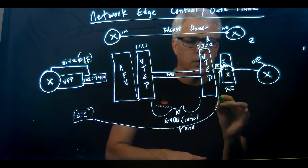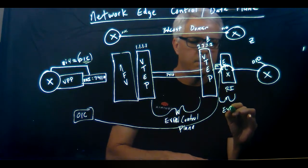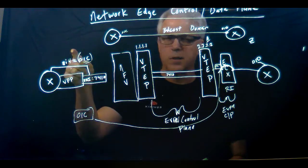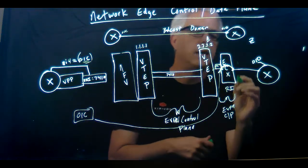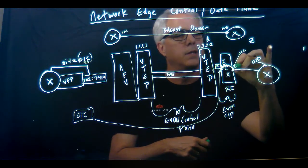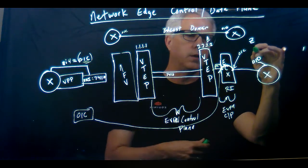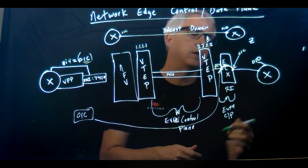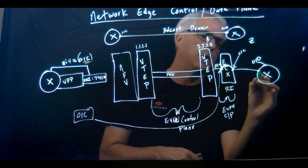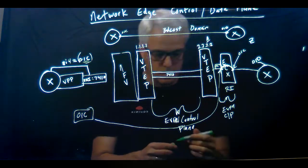So I've got two EVPN control planes that are stitched together to move the MAC address 01C and put it on this interface. Once this 01C MAC address ends up on this interface, we do head-end replication — it's called BUM head-end replication: broadcast, unknown unicast, and multicast replication. And we just replicate that out this interface to this interface on the router.